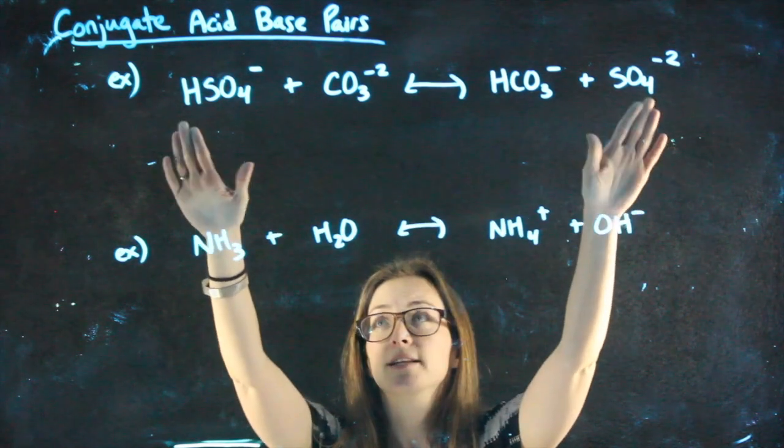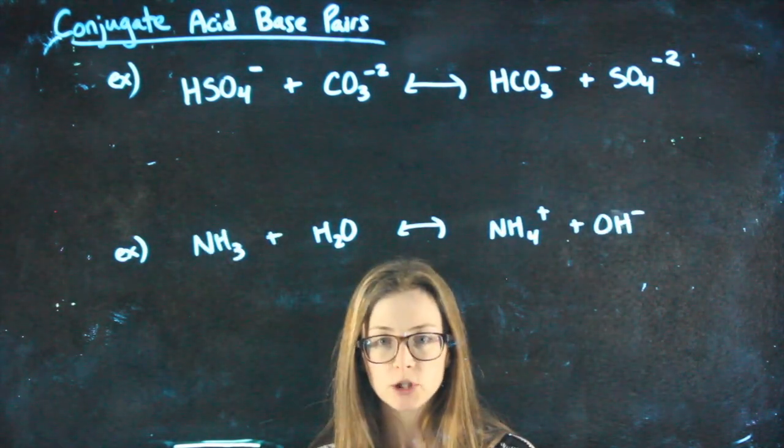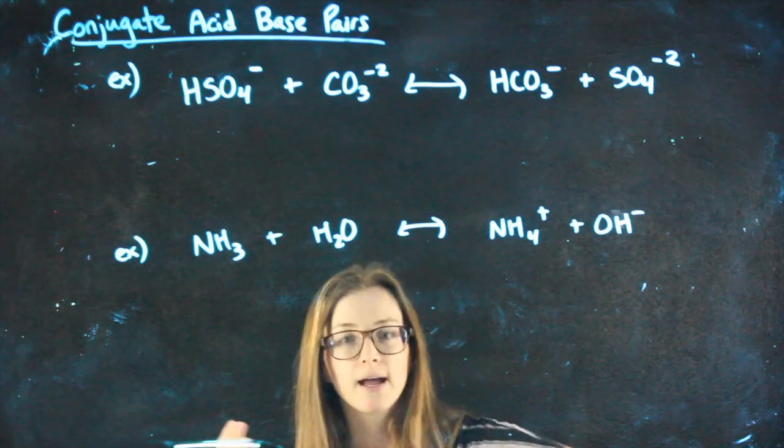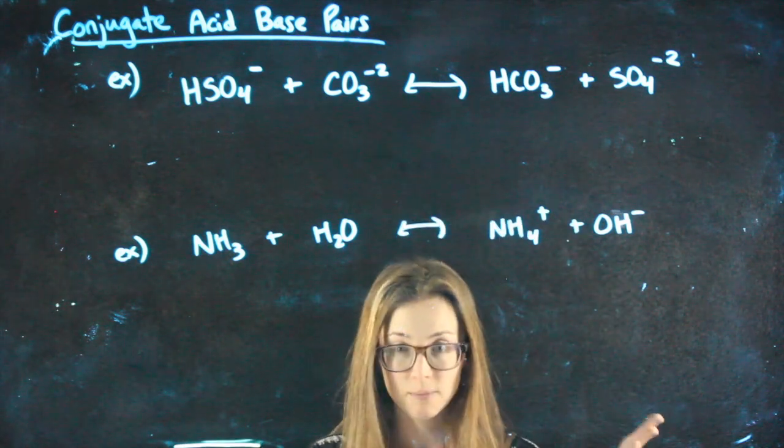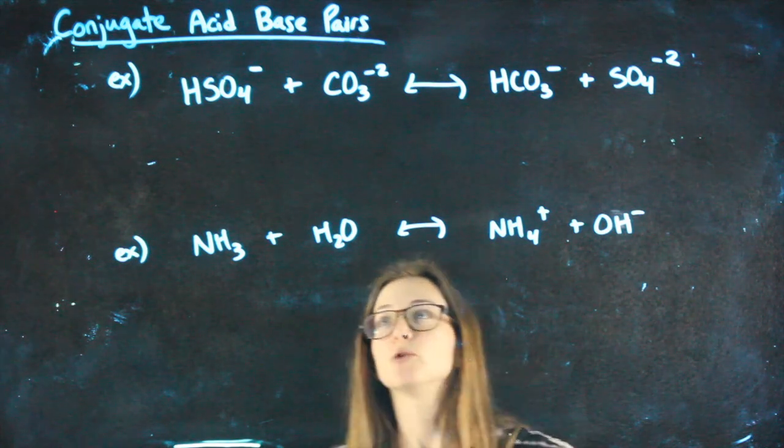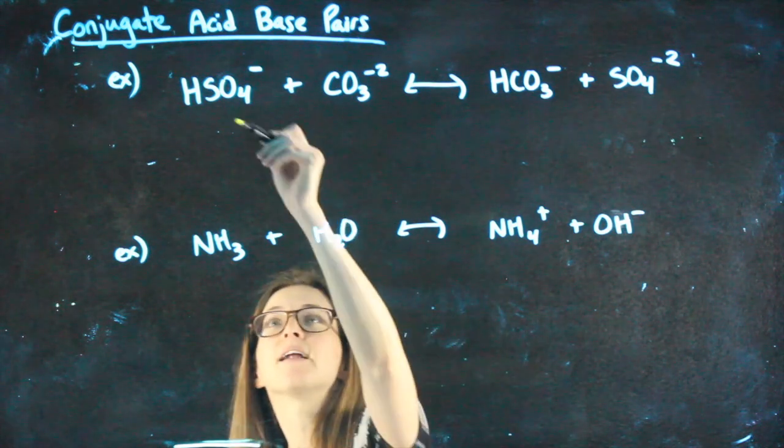If you're given a reaction like this one, the first thing we want to do is look for something that looks like a conjugate pair: something weak and something that's just like it but has exactly one more or one less H+. So my first thing I'm going to do is identify the fact that